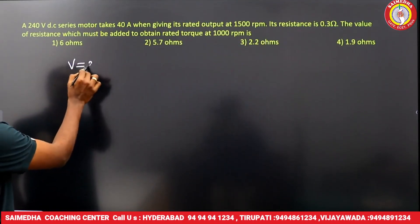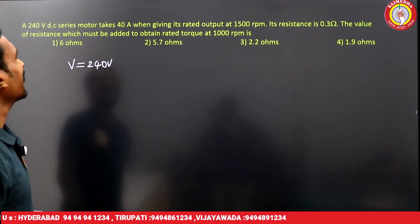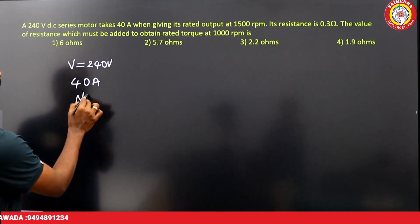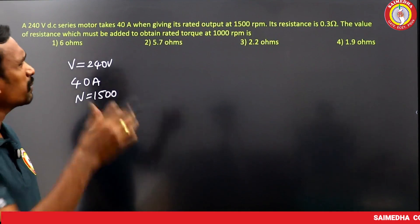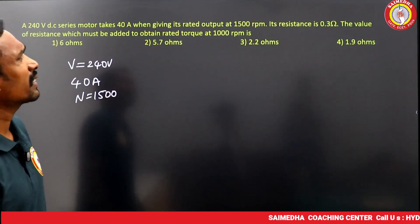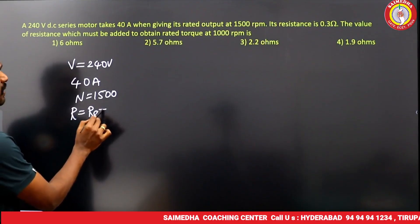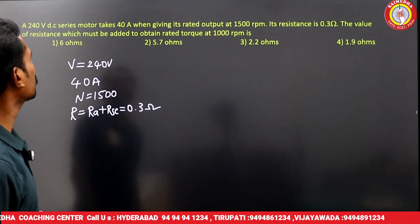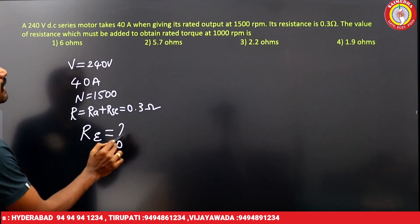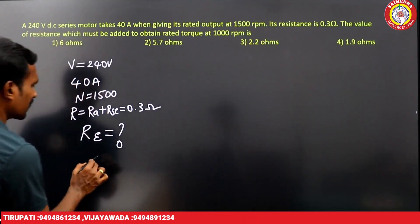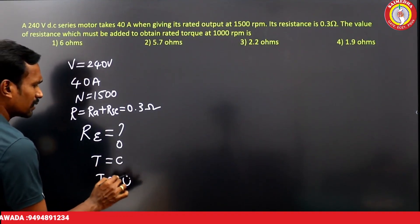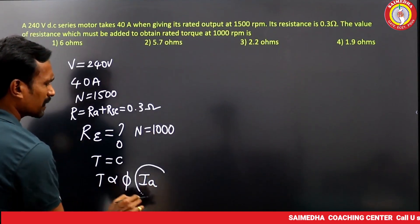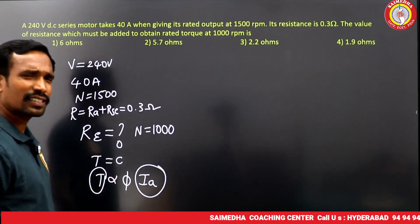Next: a 240-volt DC series motor takes 40 amperes at a rated speed of 1500 rpm. The total series resistance (Ra + Rse) is 0.3 ohms. Find the value of extra resistance to be added in series to obtain rated torque at a reduced speed of 1000 rpm. Since torque is constant, flux is constant, and armature current is constant at 40 amperes.